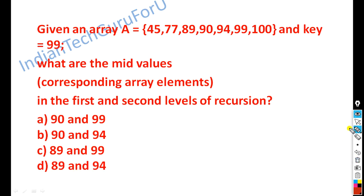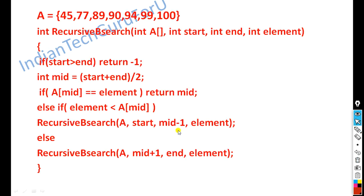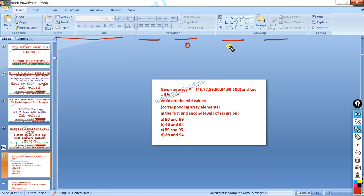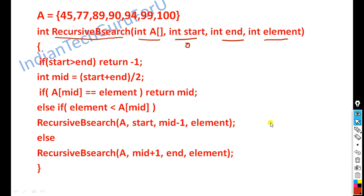Now for the answer: first of all, we need to apply the binary search algorithm — specifically the recursive binary search algorithm. The parameters are start value, end value, and the element (key value). The initial start value is index 0. The ending index is 6 (elements at positions 0,1,2,3,4,5,6). End value is 6. Key value is 99.